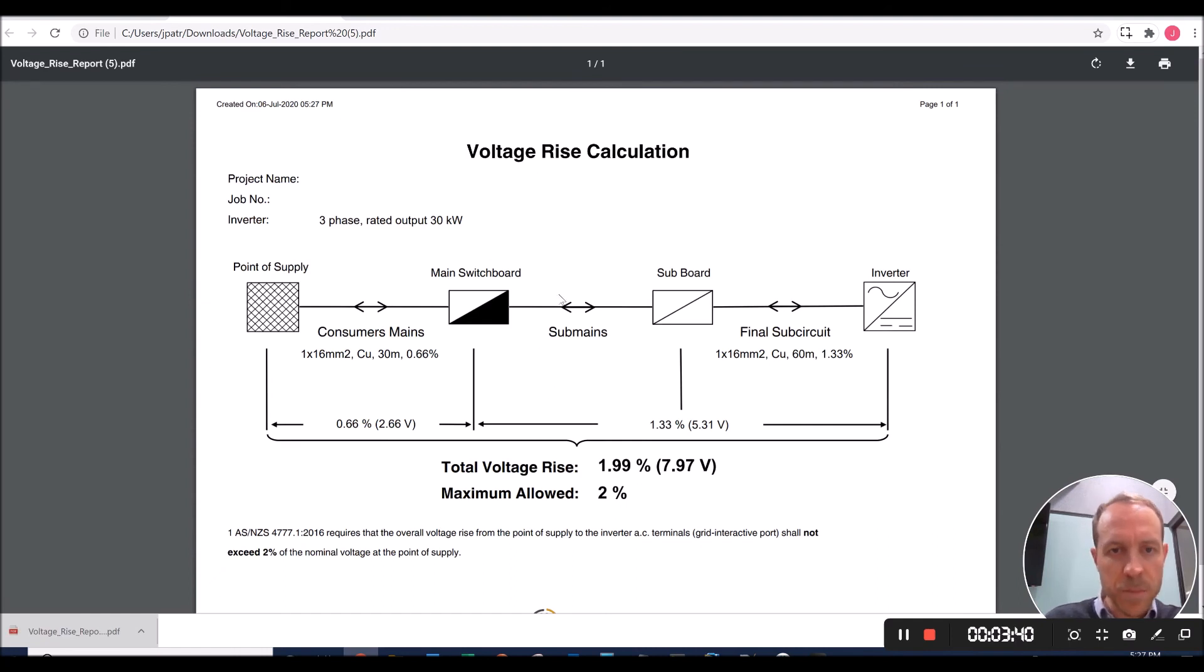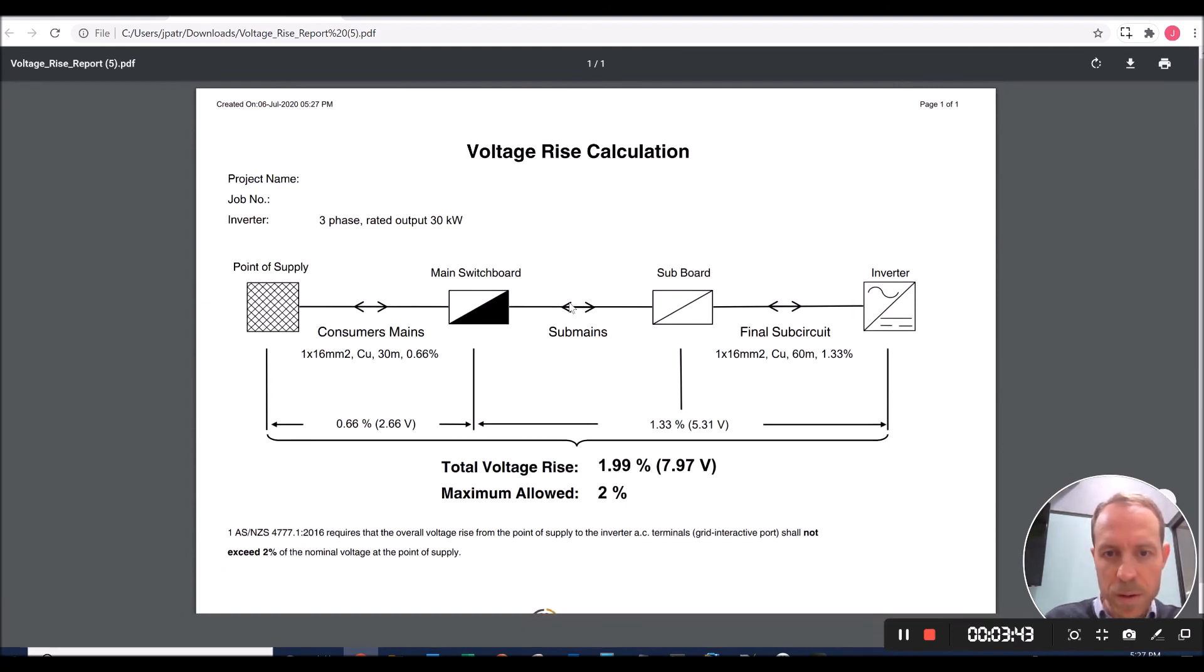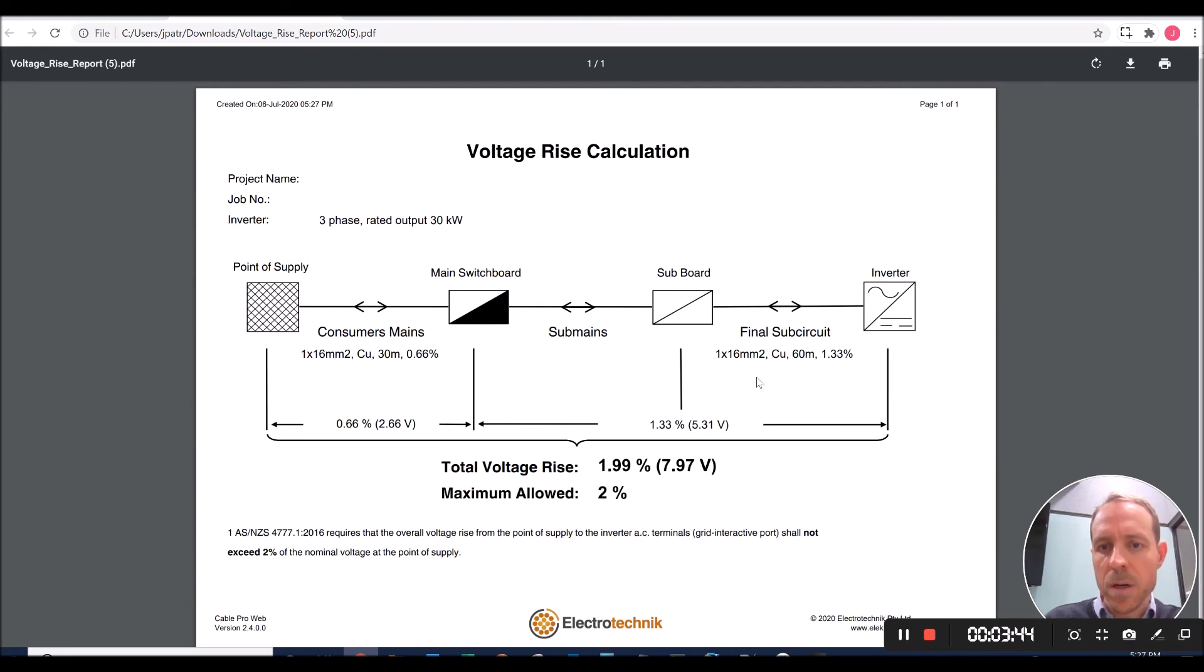Here we have a customized voltage rise report for our installation, showing that for the final sub-circuit, which is connected to the inverter, we've got our 1 by 16 square millimeter copper cable over 60 meters. The voltage rise is 1.33% for that section.